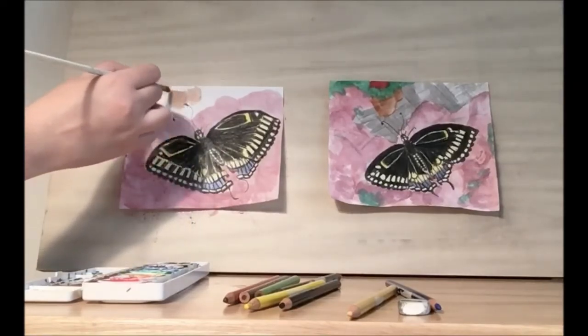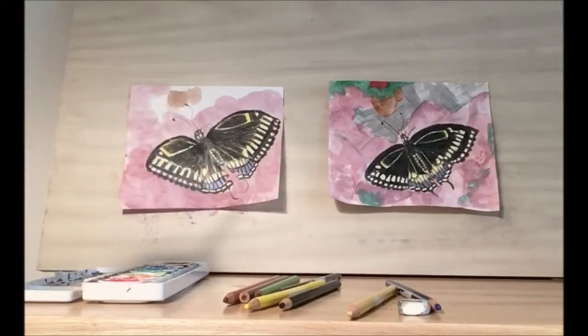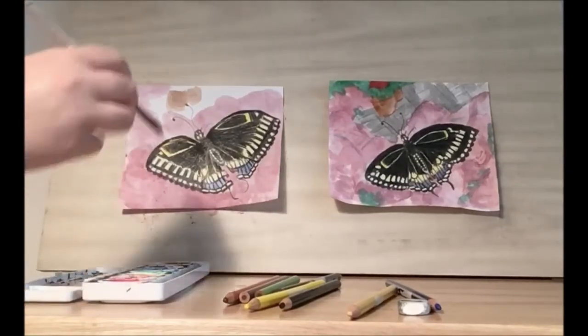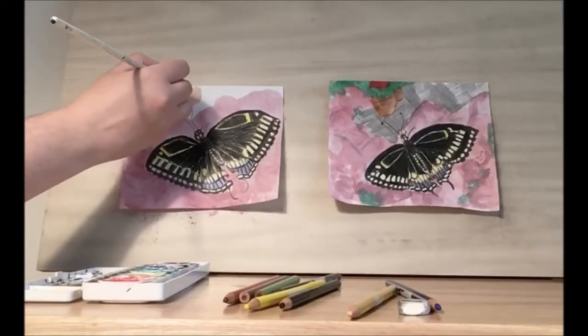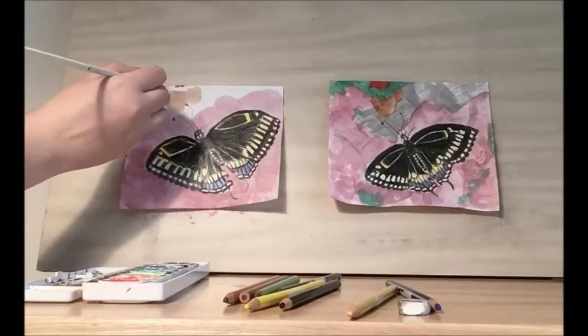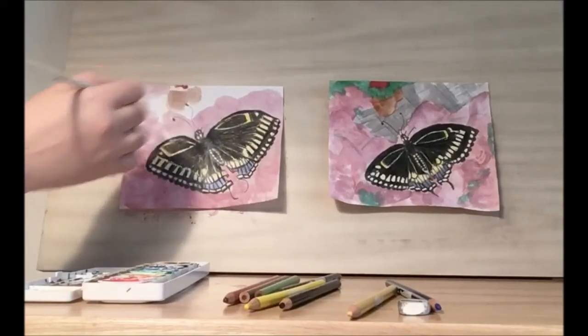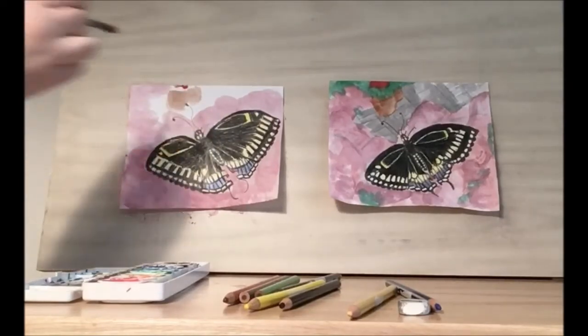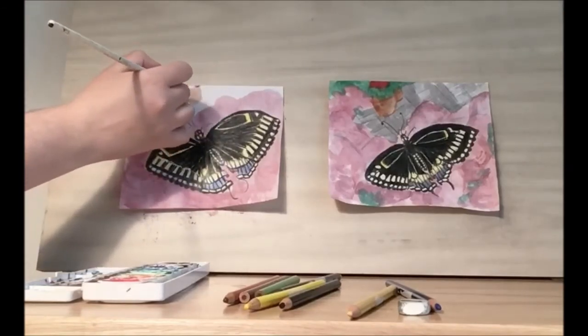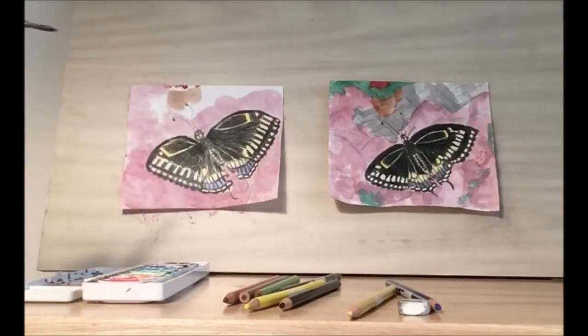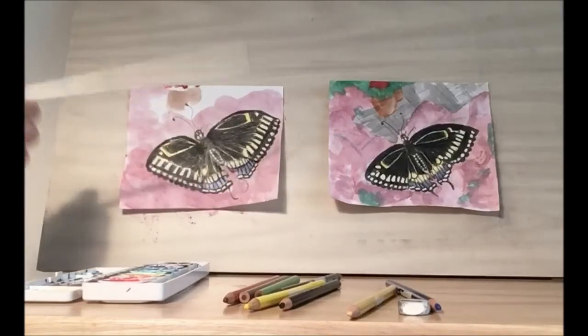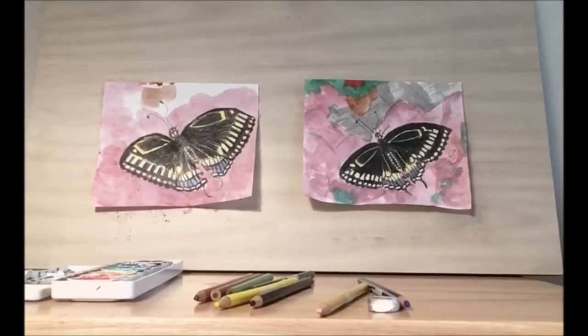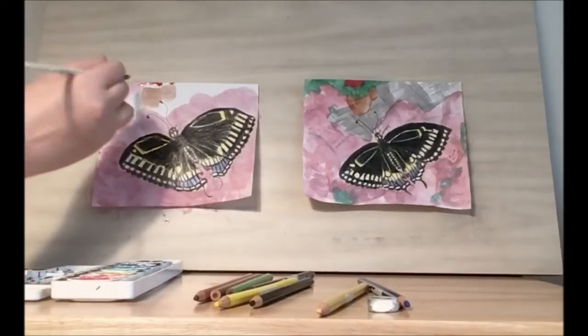You can play with this until you get the shade that you want and then for the flower I did a red flower. You can do pink if you want to keep it consistent with the flowers that the butterfly is sitting on and I took green.